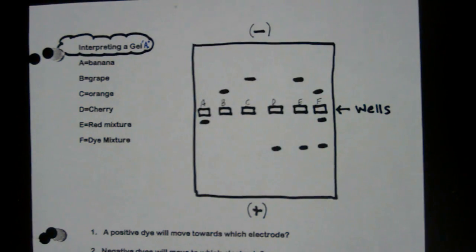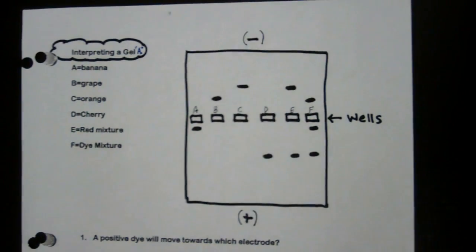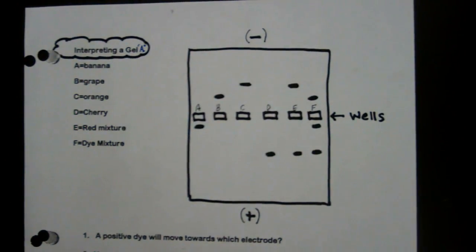So how do you interpret a gel once you have the results? This is a practice gel. We're using dyes for this one, assuming that, and we have six wells.